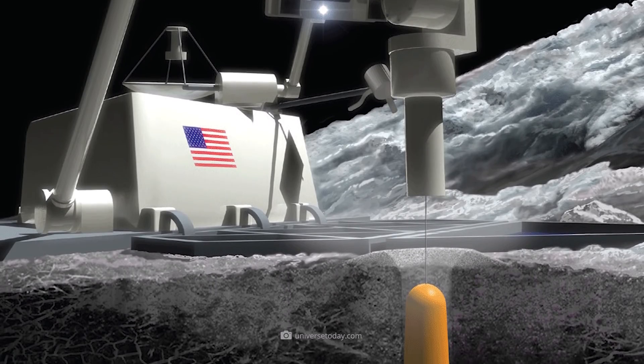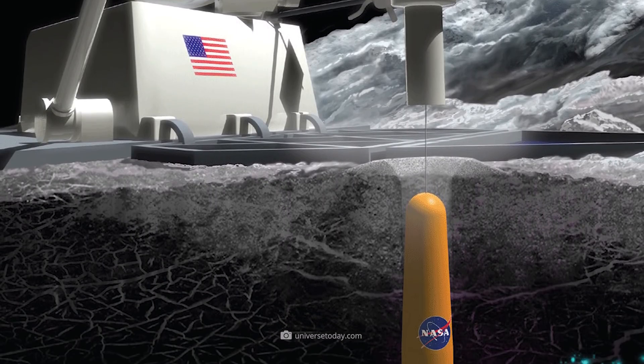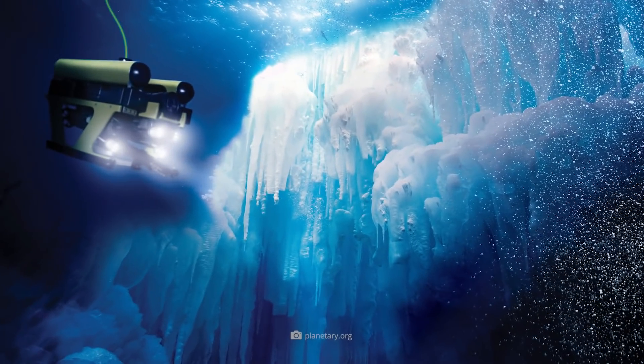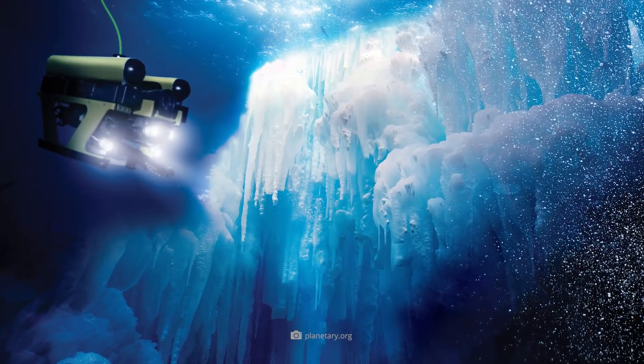A so-called cryobot spacecraft will melt its way through the thick ice crust of the celestial body and then lower a kind of submarine into Europa's ocean.